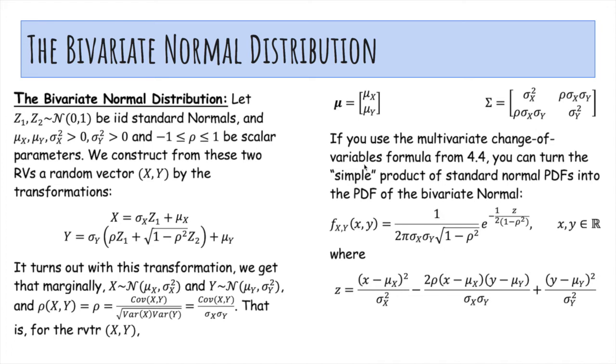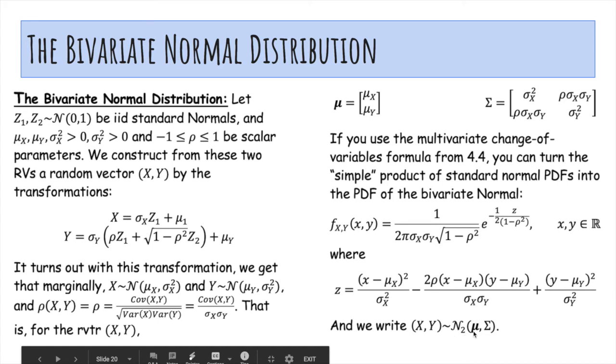And so if you use the multivariate change of variables formula from 4.4, you can turn the simple product of standard normal PDFs into the PDF of the bivariate normal, which is not important, but here it is. And we'll say X and Y are a bivariate normal with mean vector mu and covariance matrix sigma.